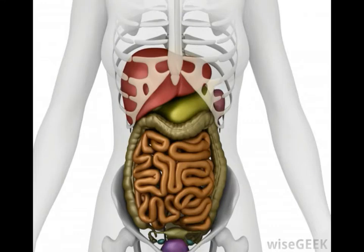This area of the small intestine has a very large surface area, created in part by folds of tissue. Projections known as villi also increase the surface area of the jejunum, with each projection sticking up like a small finger.